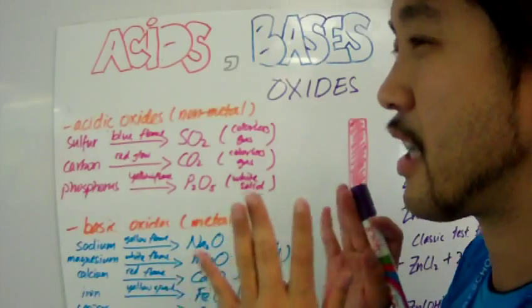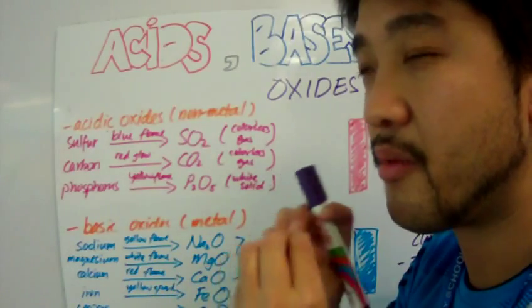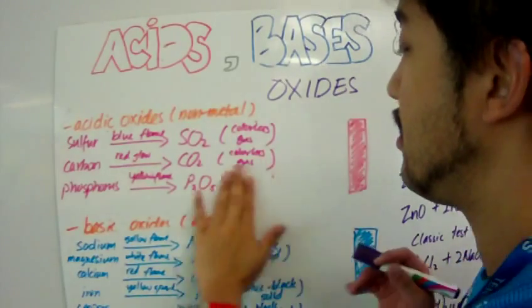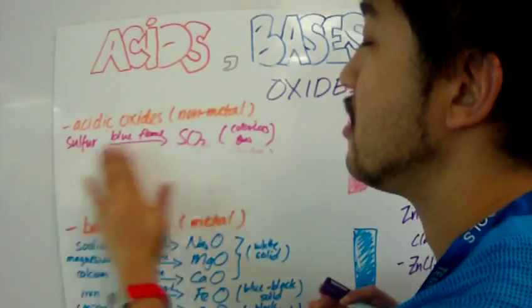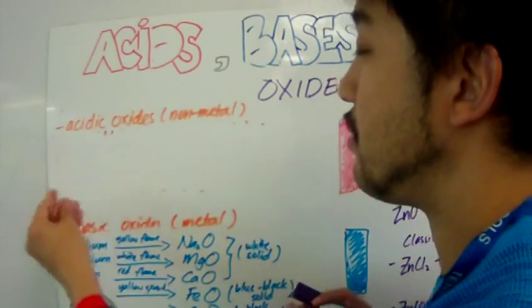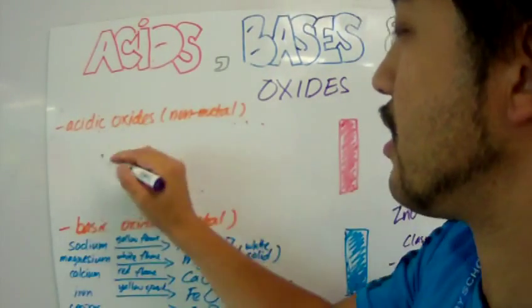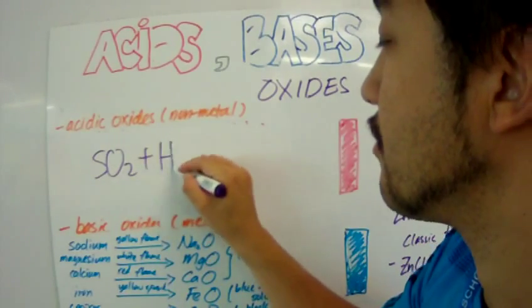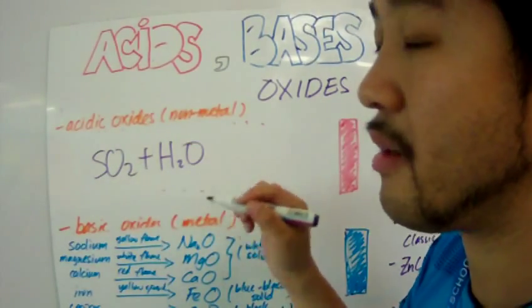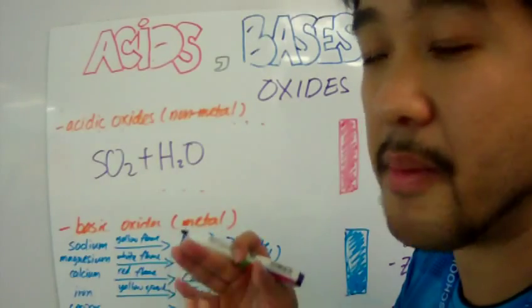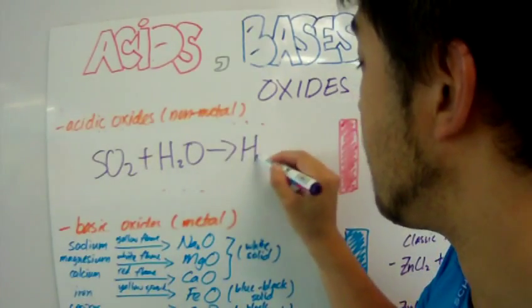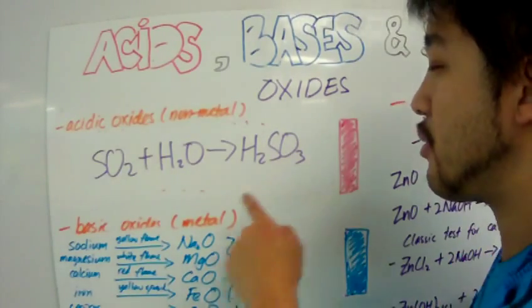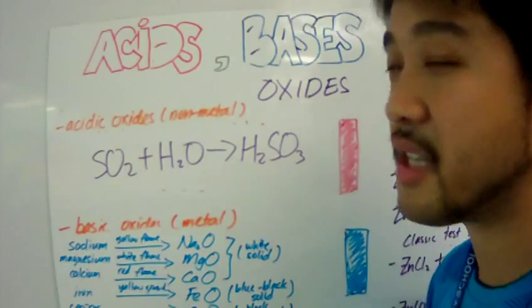What happens chemically, or how do we write the equation of what happens when you put this oxide in the presence of a damp litmus paper? I'm going to use sulfur dioxide as the example. Sulfur dioxide, when you put it in the presence of water, which can be attached to the damp litmus paper, will turn and become sulfurous acid. That's how we know that this is an acidic oxide.